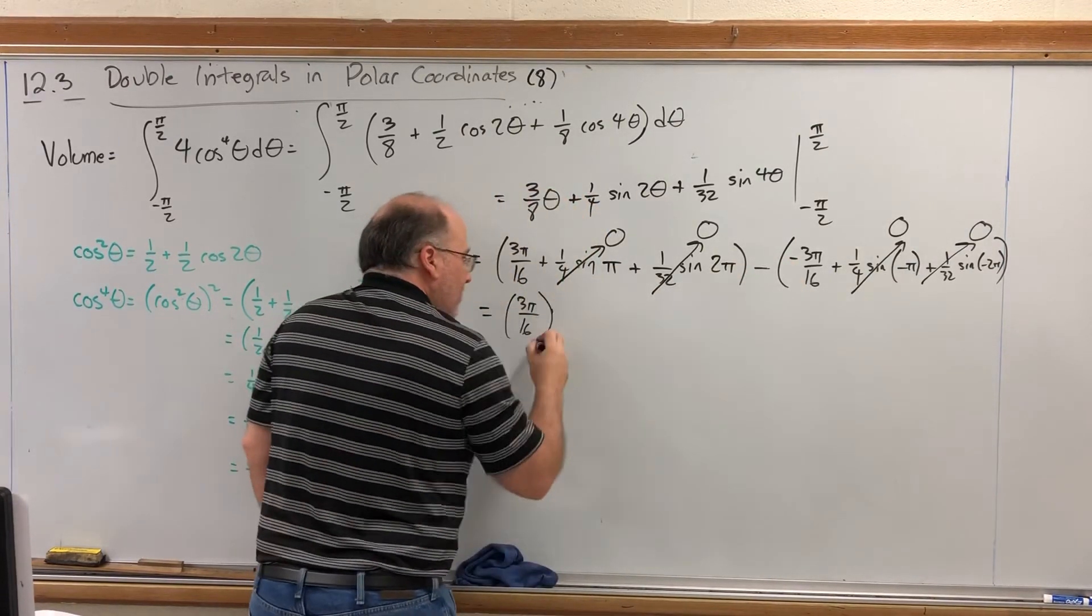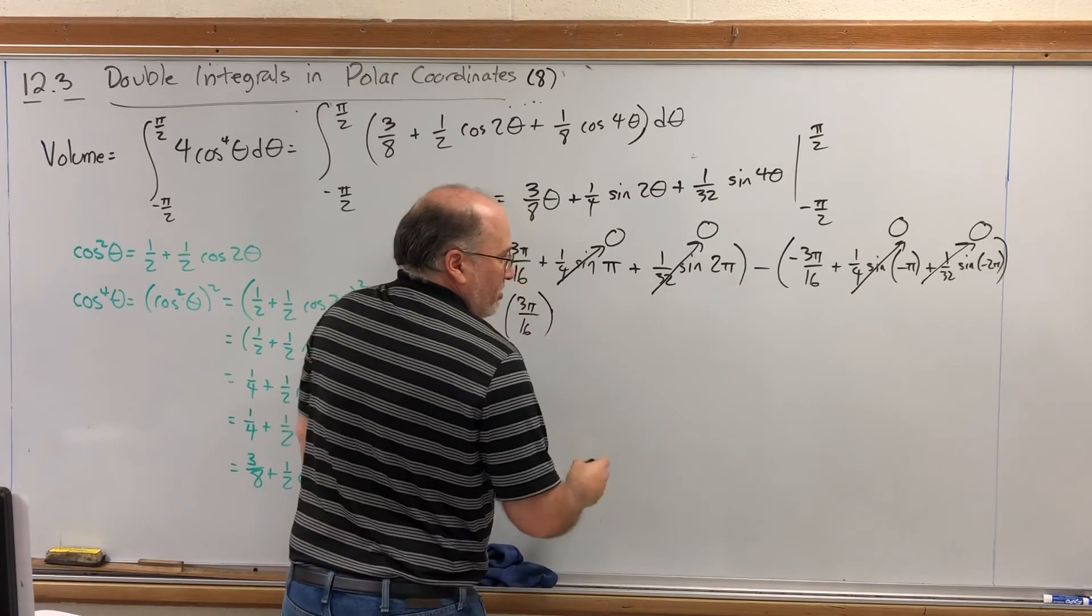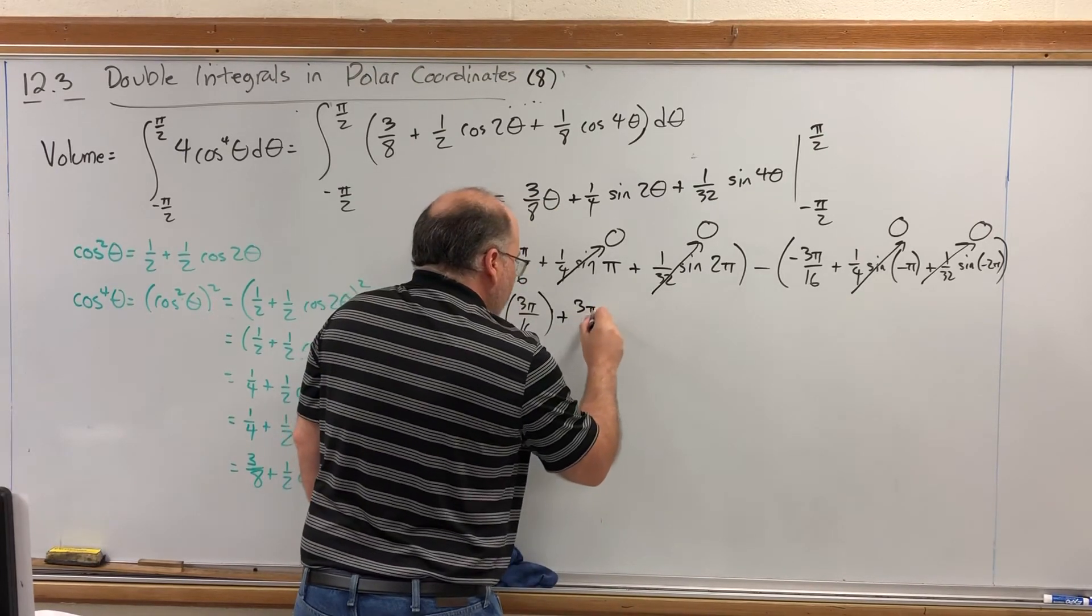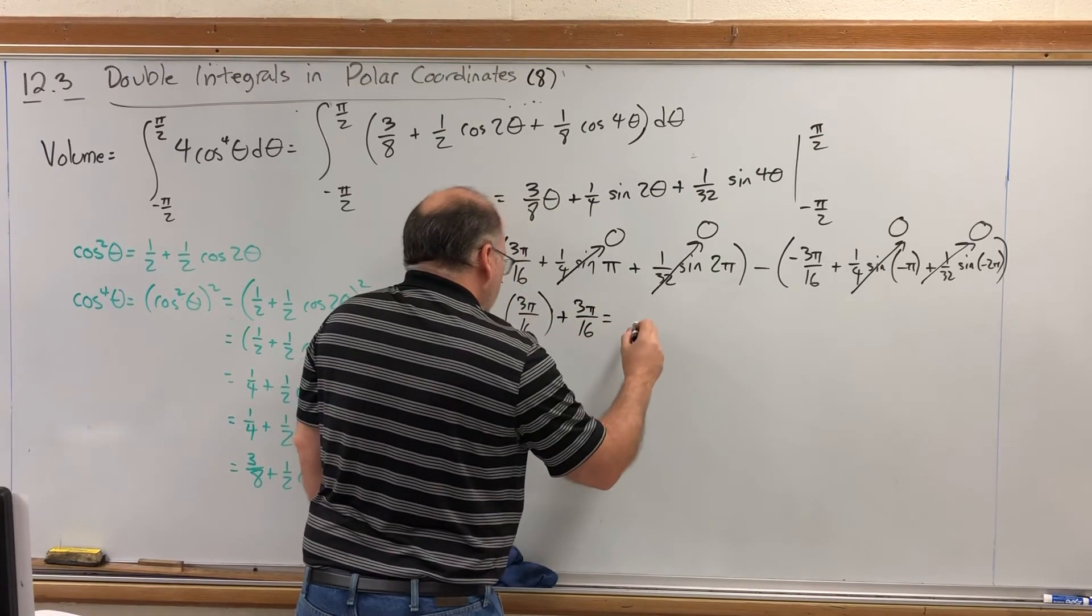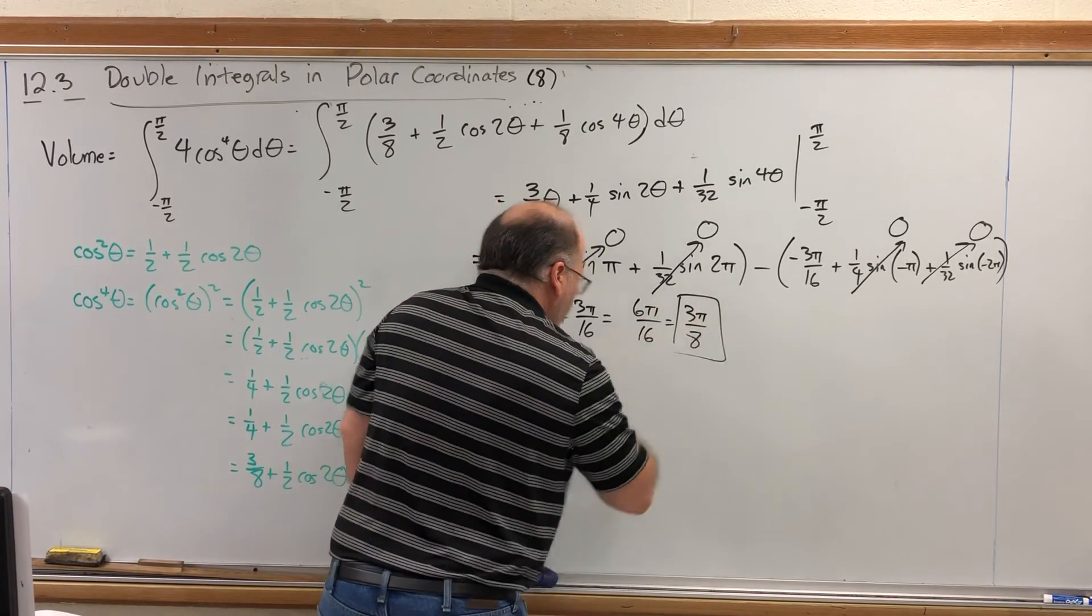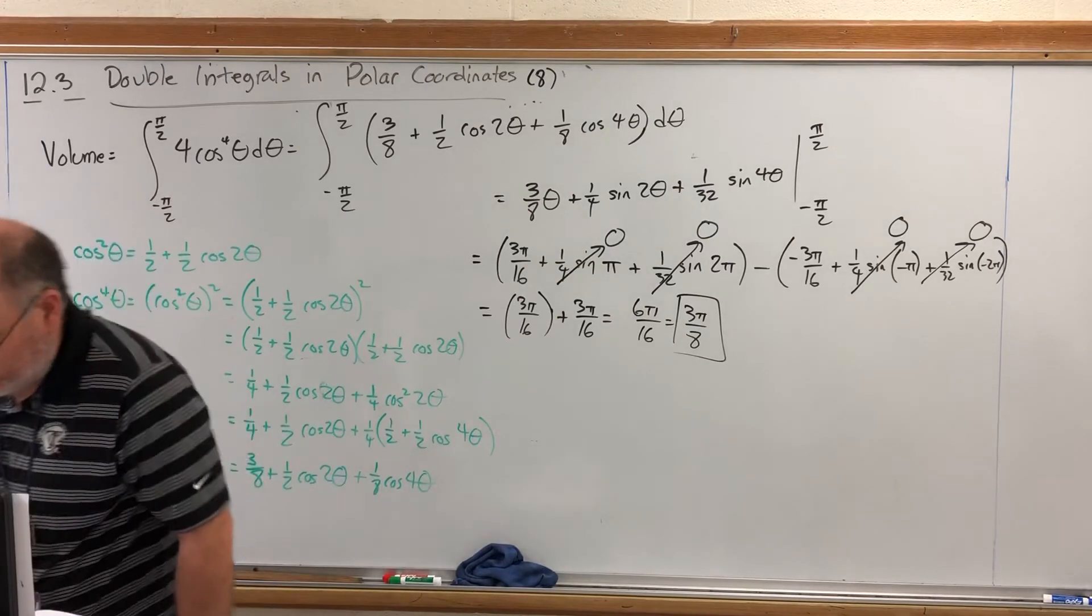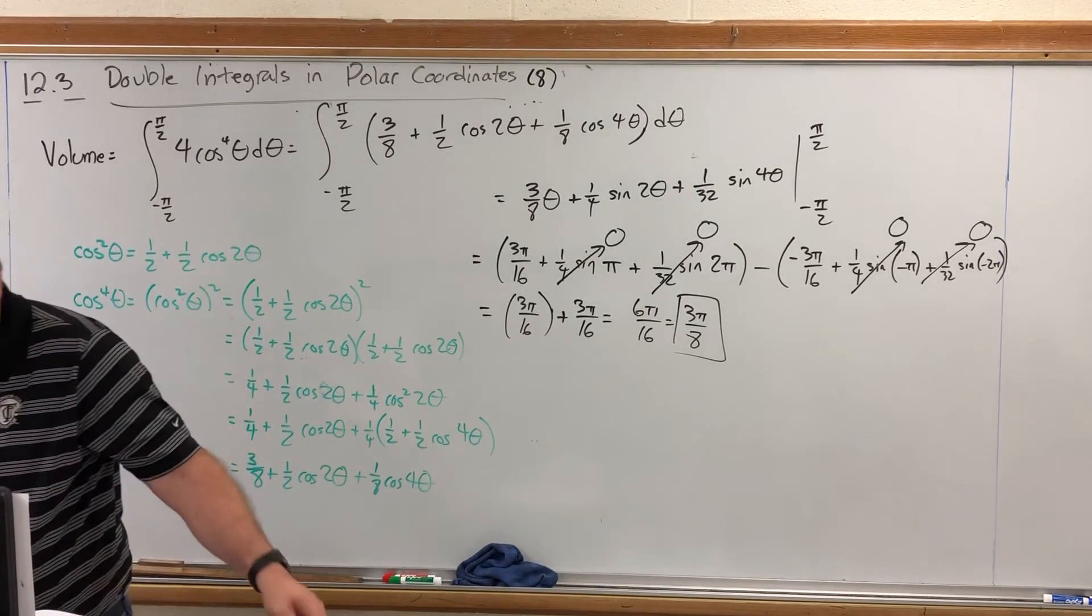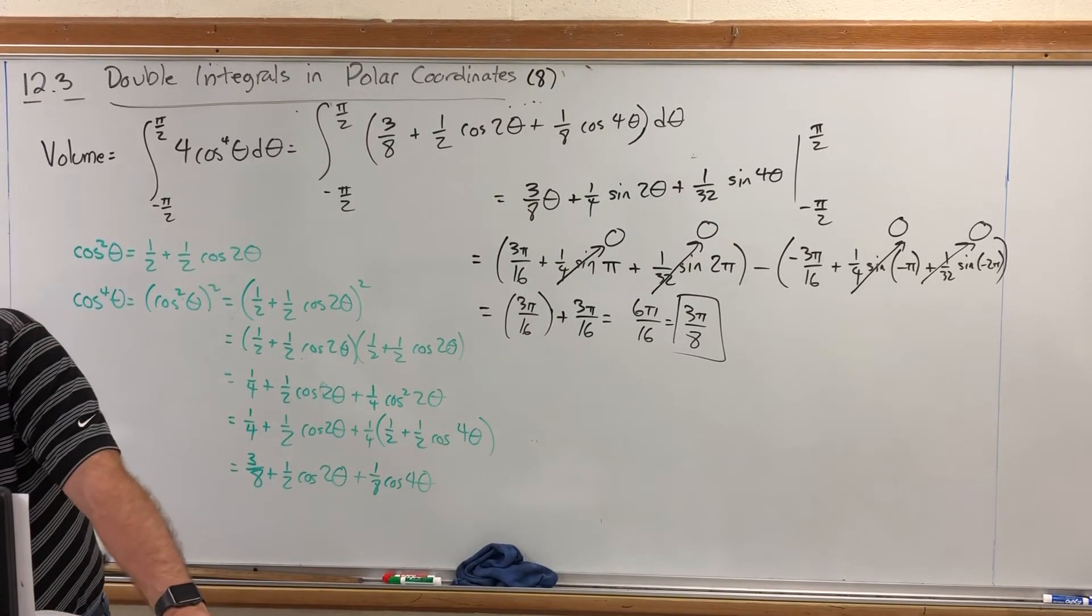Don't forget this guy minus negative three pi over sixteen, well that's just positive three pi over sixteen so that's six pi over sixteen which is three pi over eight which should be the answer. I'm going to check to make sure I know what I'm doing and something went awry. What went awry?